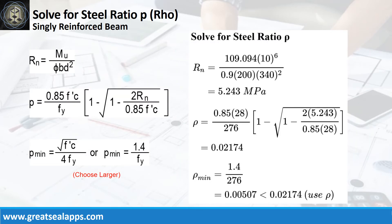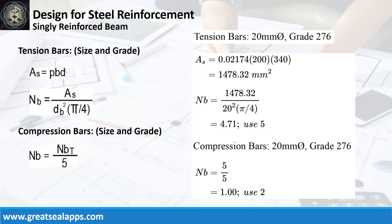Given maximum moment of 109.094 kN·m, resistance factor of 0.9, b equals 200 mm, and d equals 340 mm, the beam design ratio RN equals 5.243 MPa and reinforcement ratio ρ equals 0.02174. The area of steel for tension bars is 1478.32 mm², requiring 5 pieces of 20 mm bar. The number of compression bars is 2.